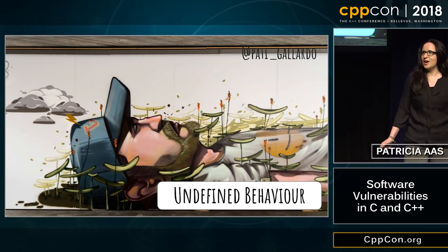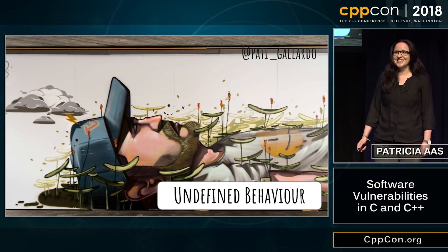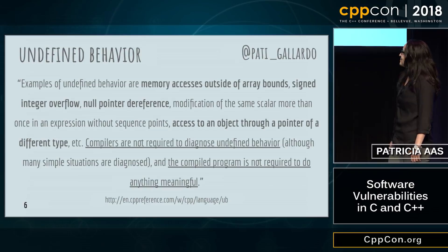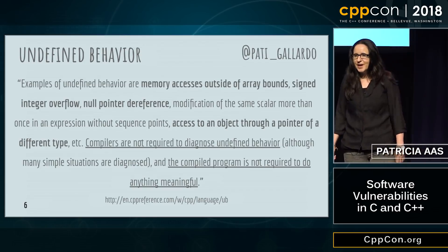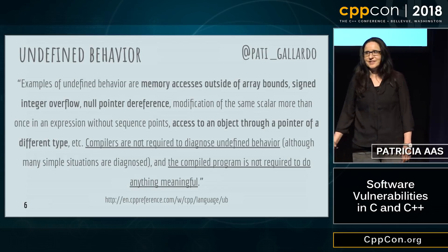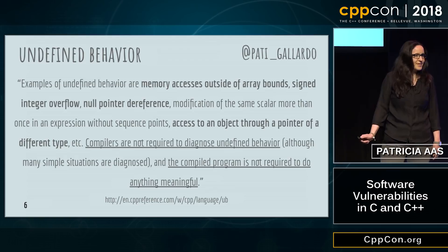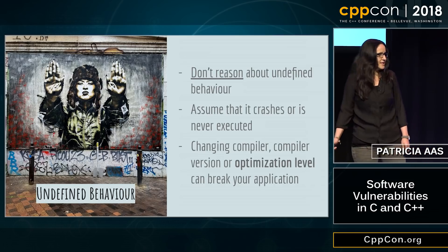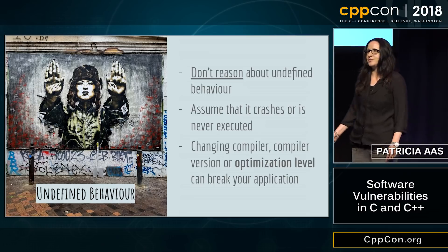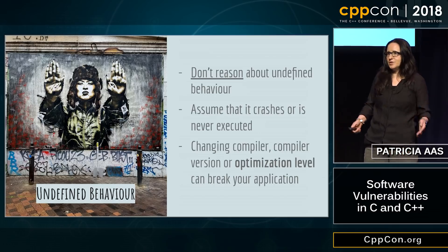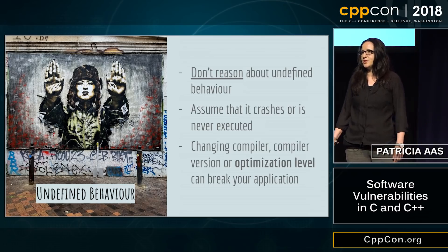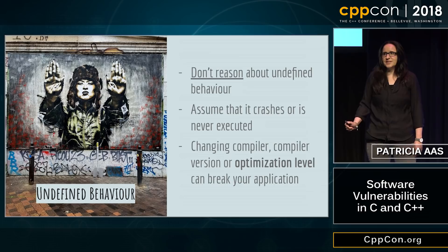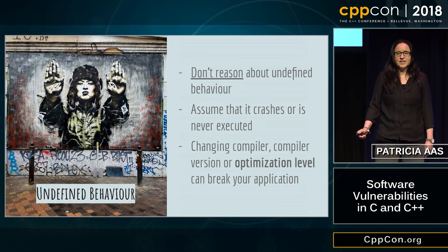Undefined behavior. How many of you are intimately familiar with undefined behavior? Basically, anything can happen with undefined behavior. If you depend on undefined behavior, weird things can happen. The most important thing to conclude is that you shouldn't reason about undefined behavior. We've had a culture where people reason about it, thinking 'my compiler will do this and that,' and you end up with code that depends on undefined behavior. Even changing the optimization level might actually change the execution of your program.